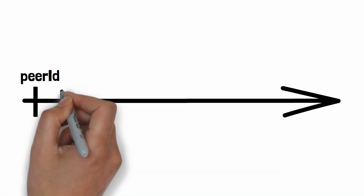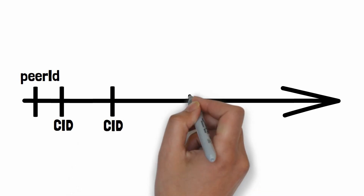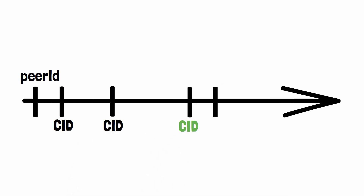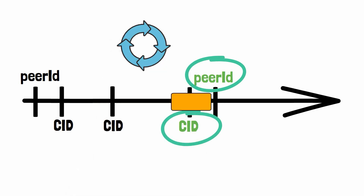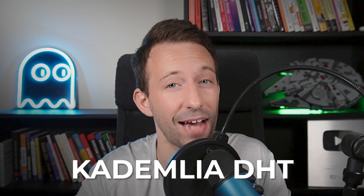Since the peer IDs are distributed evenly, we are sure that the whole DHT will be covered. So with the DHT, we know how to break down our giant catalog of data across the whole IPFS network. When a client wants to find the location of a piece of data, it contacts the closest peer ID to the CID, asks if it knows about that CID, and if not, asks for any peer ID closer to the CID. By repeating this algorithm, you will eventually find the right peer. What I just described is called the Kademlia hash table.